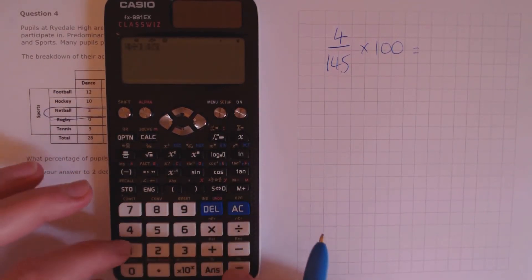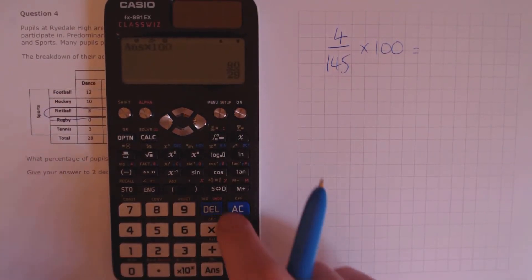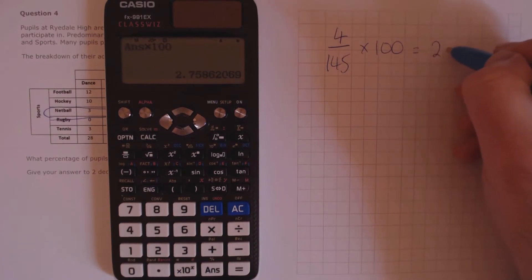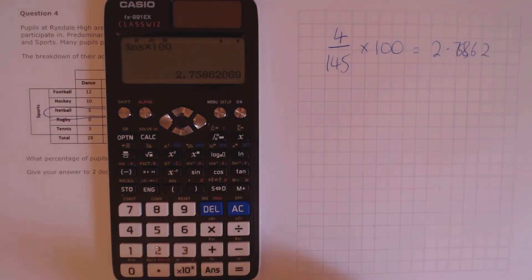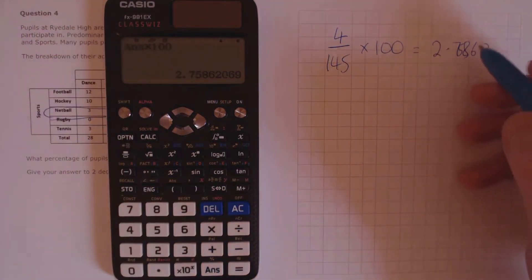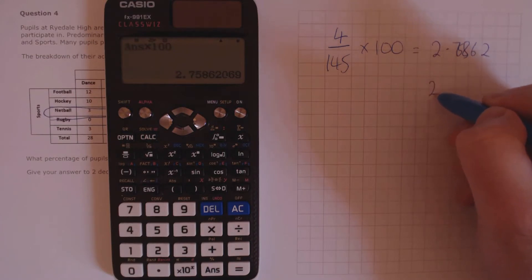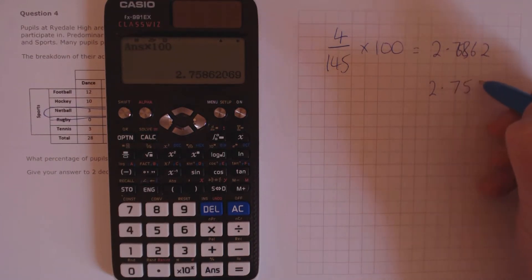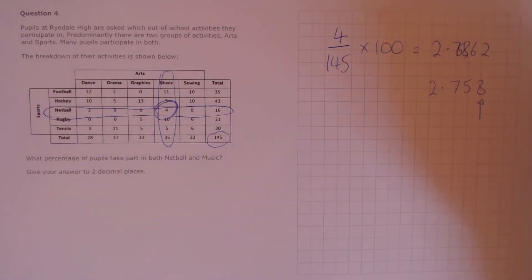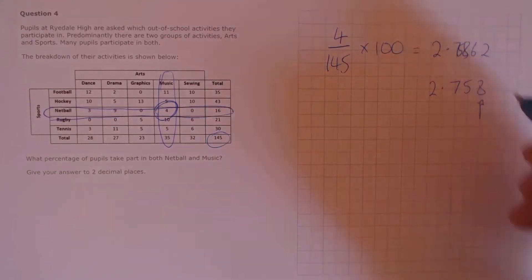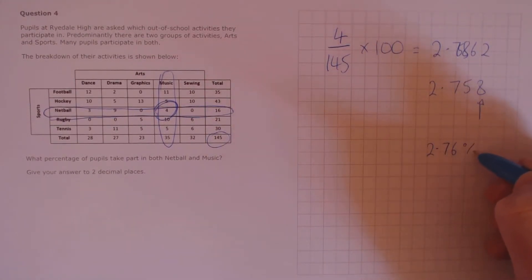Multiply it by 100 to convert it into a percentage. 4 divided by 145. That gives us 2.75862%. We need this to two decimal places, so we're concerned about 2.758. And we can look at this place to see if we have to round up or not. This is greater than 5, so we do need to round up, which gives us 2.76%.